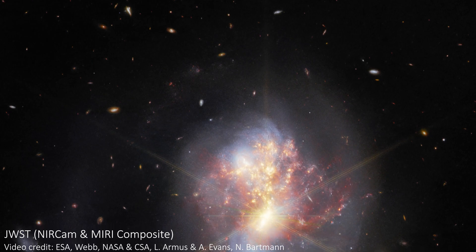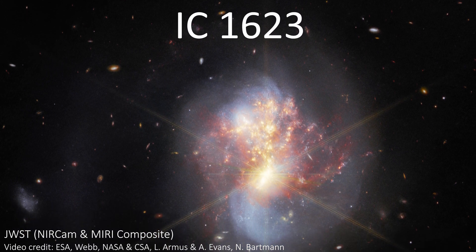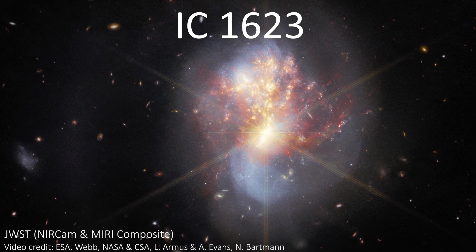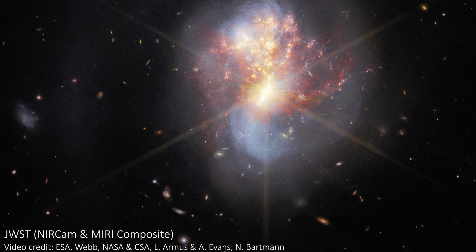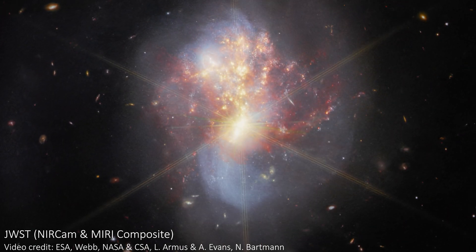First of all we've seen a pair of merging galaxies, collectively known as IC 1623. One is called IC 1623A and the other is IC 1623B. In this interaction the galaxies are very tightly wrapped together, entwined deep in a merger.